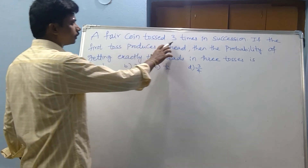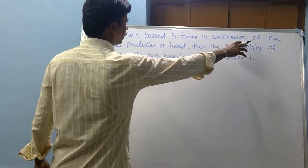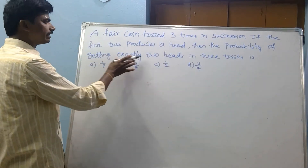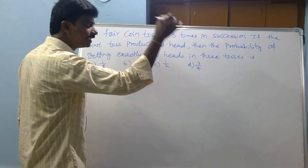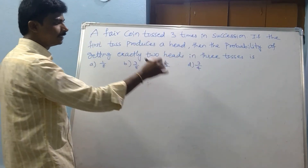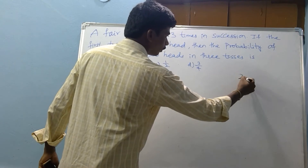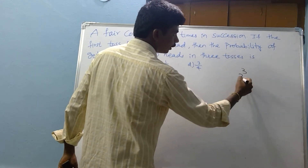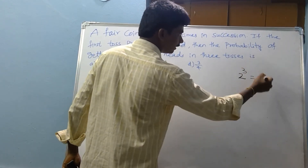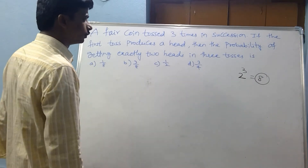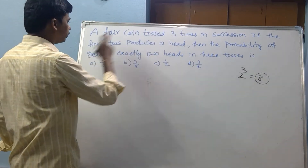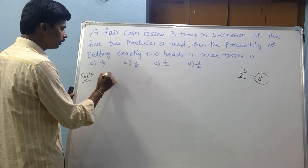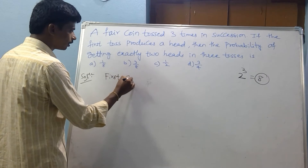A fair coin is tossed three times in succession. If the first toss produces a head, then the probability of getting exactly two heads in three tosses is? Three tosses: two cubed equals 8, so there are 8 possible outcomes.